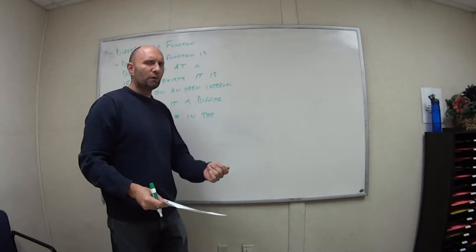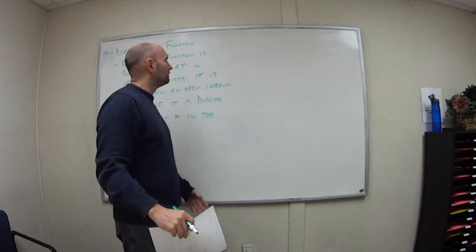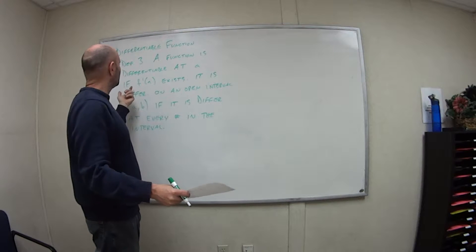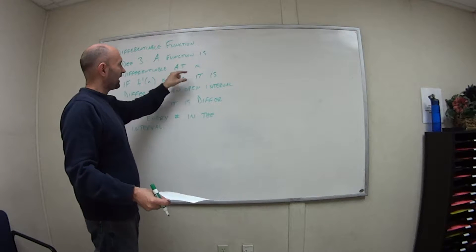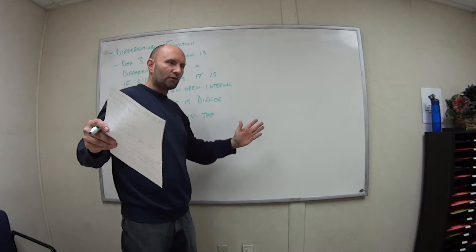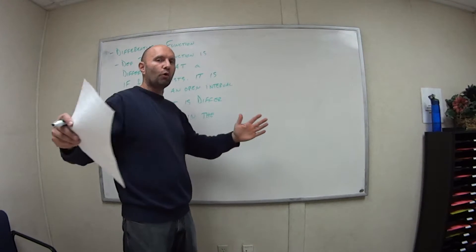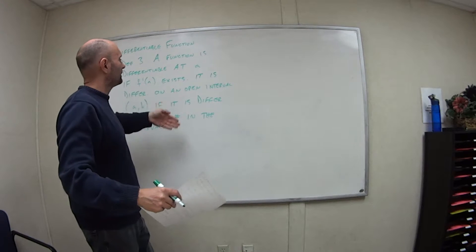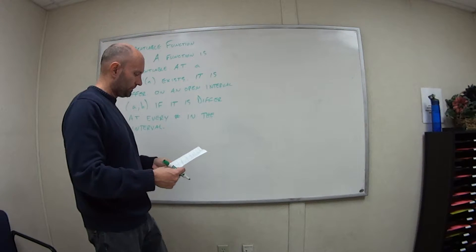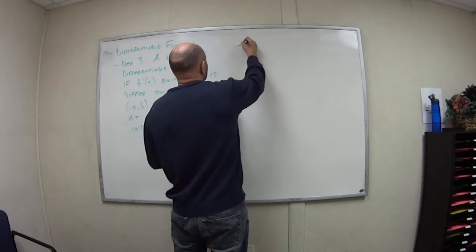So we kind of look at a point and then expand it to a whole interval. A function is differentiable if its derivative exists at that point a, and it's differentiable on a whole interval if it's differentiable at every number in the interval. Kind of makes sense. This gives us a theorem, theorem four, which says that if f is differentiable at a...